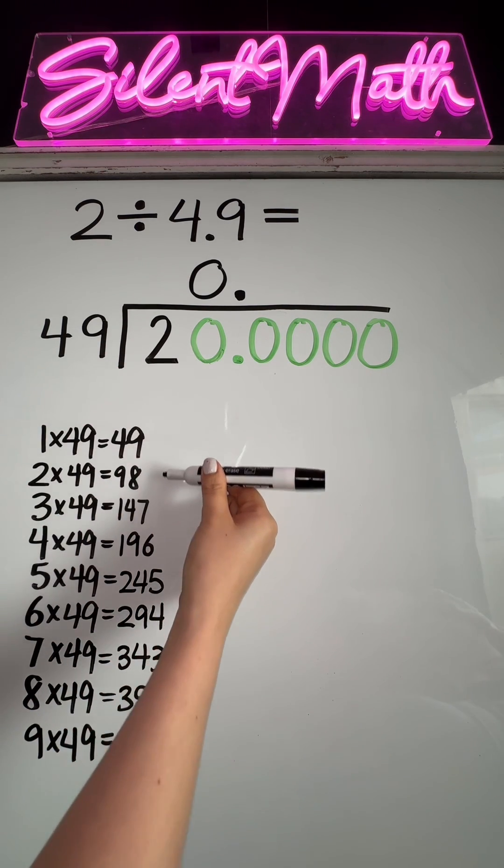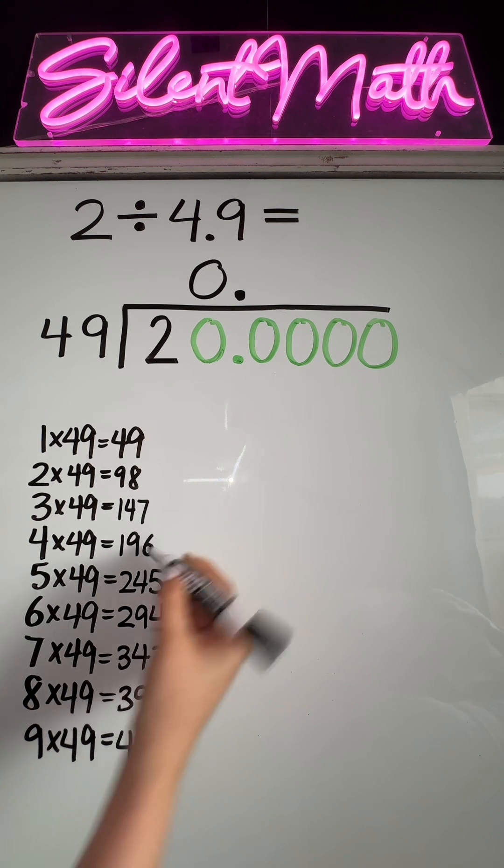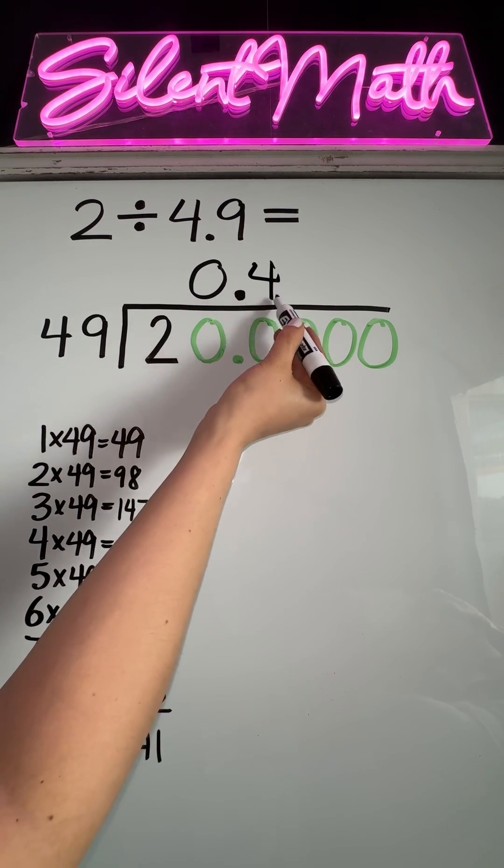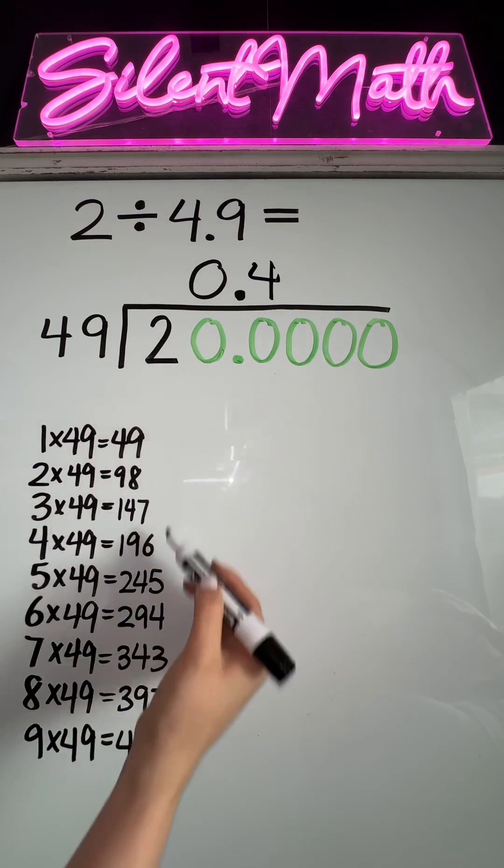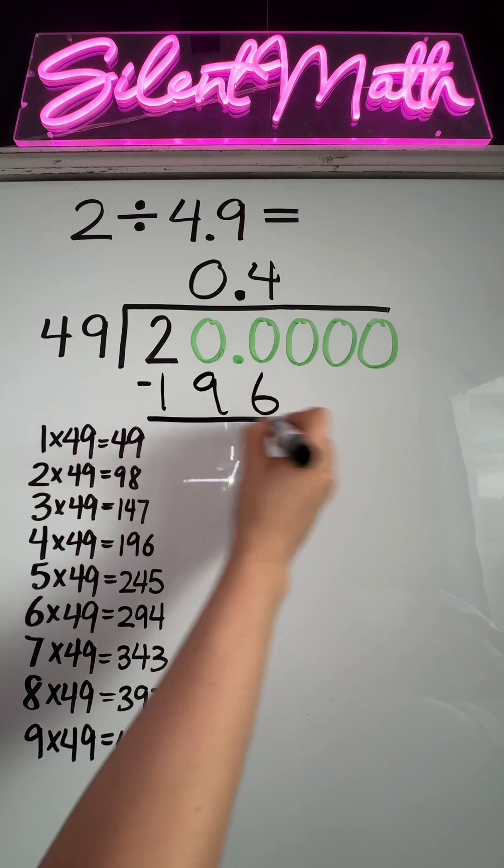We're going to use this list. We want either equal to 200 or a little less. This is the one that comes the closest, and that was four groups of 49. So four is going to go here. You're going to put the product of four and 49 under the 200. We said it was 196. You're going to subtract. The difference is four.